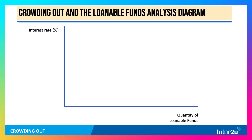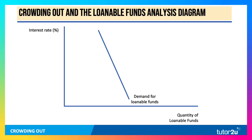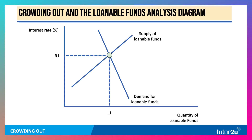So here's the diagram — this is the so-called loanable funds diagram. On the y-axis, the interest rate on loanable funds; on the x-axis, the quantity of loanable funds. There's a demand for loanable funds, which is inversely related to the rate of interest. And there's the supply, which is positively related to interest rates.